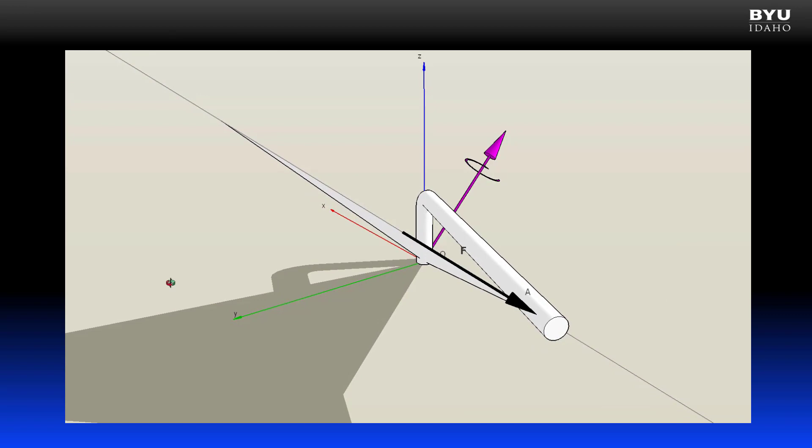Suppose that what we really want is not the moment at some random orientation, but instead the moment about the Z axis. Or it could be any other axis that we can define. There are some reasons why we would want to find the component of the moment about another axis. We'll talk about that in a minute. First, let's look at how we do it.